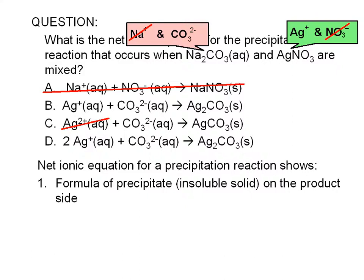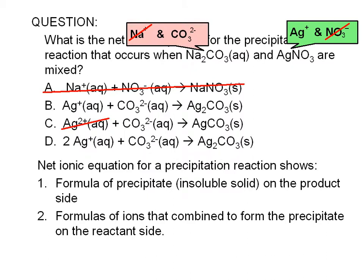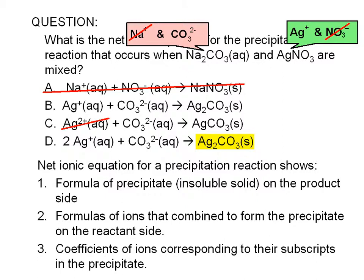The net ionic equation for a precipitation reaction simply shows the formula of the precipitate on the product side — in this case, silver carbonate — and the formulas of the ions that combine to form the precipitate on the reactant side. To balance the equation, coefficients for the ions correspond to their subscripts in the formula of the precipitate. In this case, the subscript of silver is 2 and that of carbonate is unwritten, meaning the subscript of carbonate in silver carbonate is implied to be 1. So a coefficient of 2 is written in front of silver ion, and no coefficient (that is, the number one) is written in front of carbonate ion.